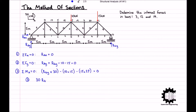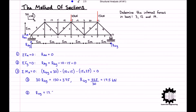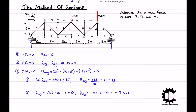As equation 3 has just one unknown, rGy, we rearrange to get rGy equals 525 divided by 30, which equals 17.5 kilonewtons. Substituting this into equation 2 and rearranging for rAy, we get rAy equals 10 plus 15 minus 17.5, which equals 7.5 kilonewtons. We can now write these forces onto our diagram: a vertical reaction of 7.5 kilonewtons upwards at node A and 17.5 kilonewtons upwards at node G.